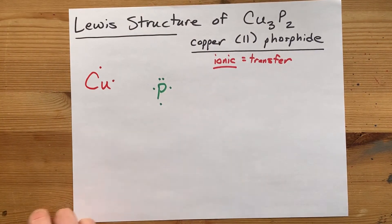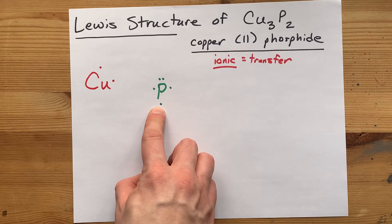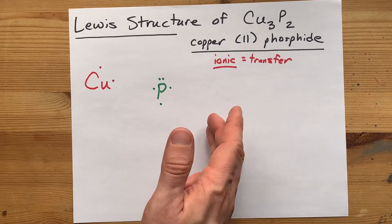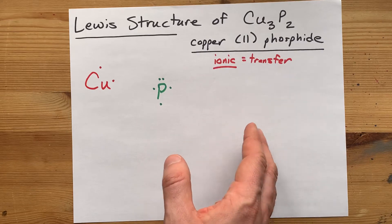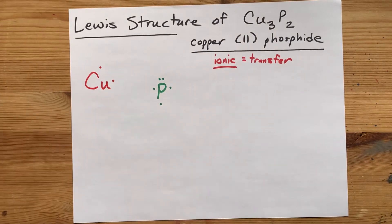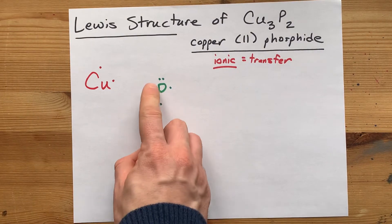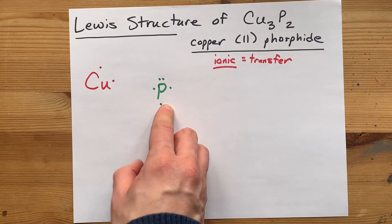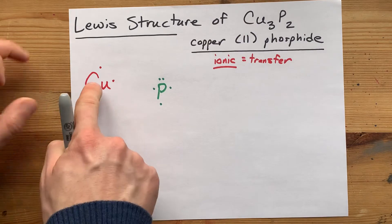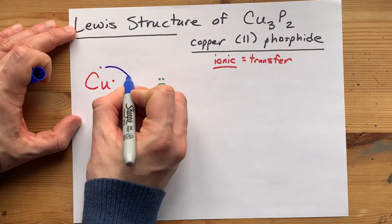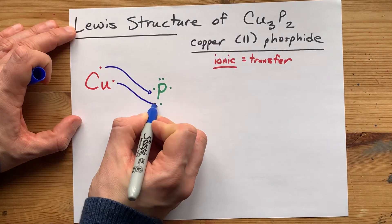The last key bit is that non-metals want a full outer shell of eight electrons to be stable. That's called the octet rule. And if this phosphorus brought five, it needs three more electrons to be stable. Well, this copper can help. It can contribute one, two electrons.